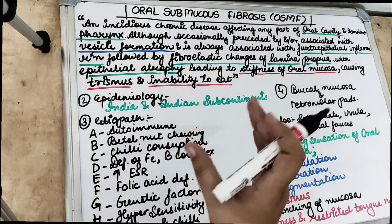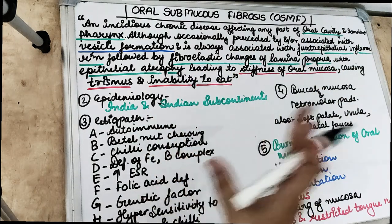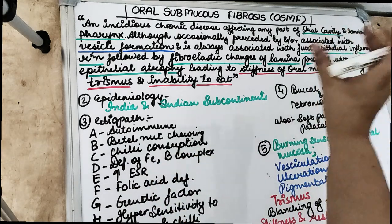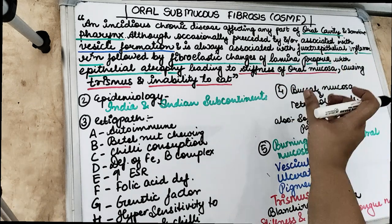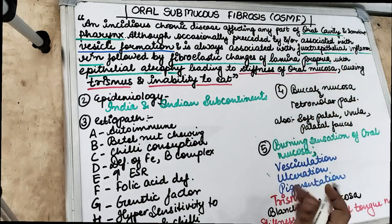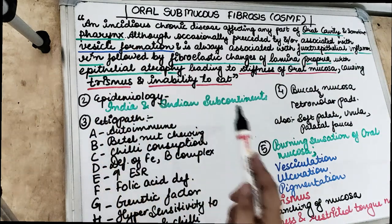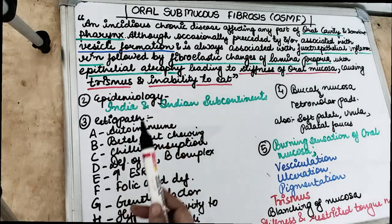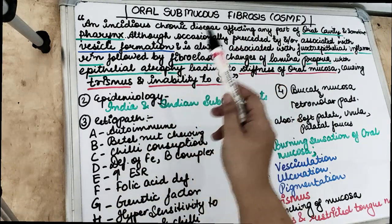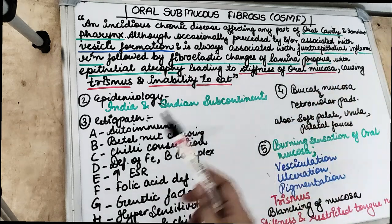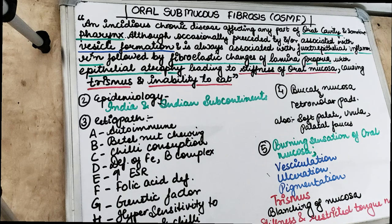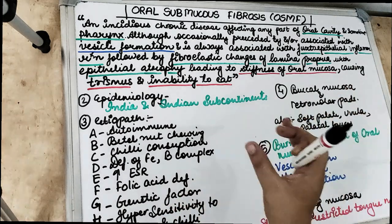Oral submucous fibrosis is an insidious chronic disease that can affect any part of the oral tissue — the buccal mucosa and retromolar pad are the most common sites, but it also sometimes affects the pharynx, soft palate, uvula, and palatal fauces. Occasionally it is preceded by and/or associated with vesicle formation clinically, and is always associated with a juxtaepithelial inflammatory reaction.